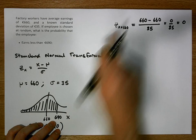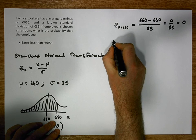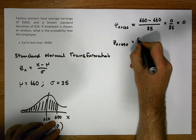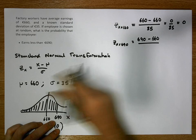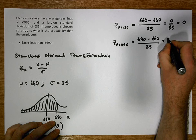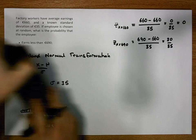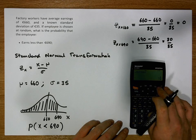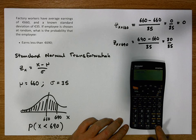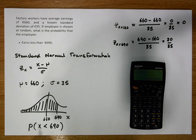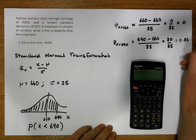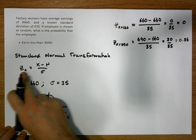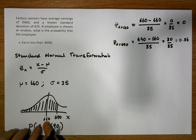Now we apply the transformation to 690: z = (690 − 660) / 35 = 30/35 = 0.857. Our tables are only accurate to two decimal places, so applying the rounding strategy this is approximately equal to 0.86.